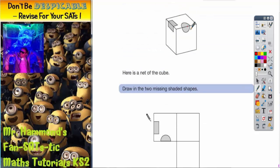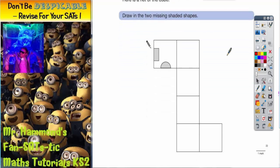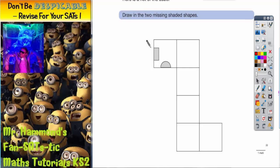In other words, we're asked to complete the net so that it will form this cube. So if we look at our net here, we've got half those shapes. We need to decide where to draw the other half.